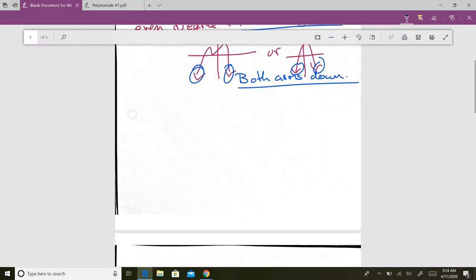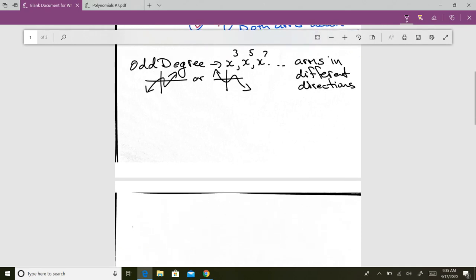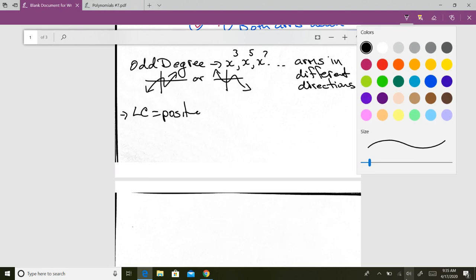So if we have an odd degree function, if it's odd, so it's x cubed, x to the 5, x to the 7, etc., arms go in different directions. Odd degree functions, like that, or again, number of bumps depends on the degree, but the arms go in different directions. Now if it's odd and your leading coefficient is positive, then the right arm is always up.